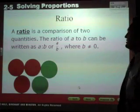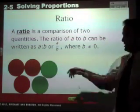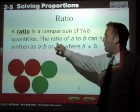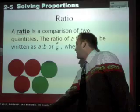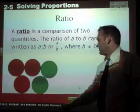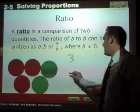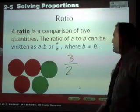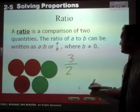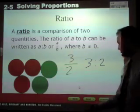A ratio is a comparison of two quantities. The ratio of A to B can be written two ways: A colon B or A over B, like a fraction. Now, if you were to write a ratio of red balls to green balls, there's obviously three red balls and two green balls. So this would be one way of writing a ratio. Another way would simply be to say three to two. Either way is fine.